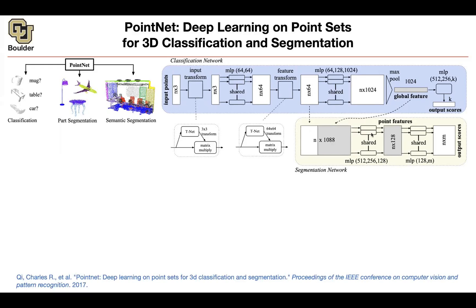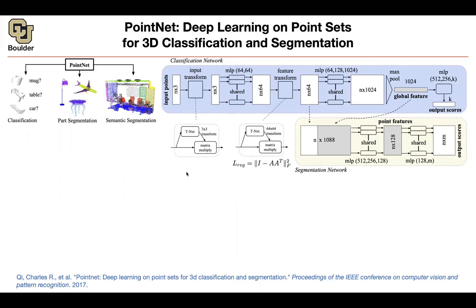The rest of the network applies point-wise MLPs — like 1x1 convolutions — changing dimensions step by step. In the end, each point gets M scores for part segmentation or semantic segmentation. There's also a minor detail: the 64-by-64 feature transformation matrix has many parameters, so it's good to regularize it toward being orthogonal. You add a regularization loss — penalizing deviation from the identity — on top of the cross-entropy loss.